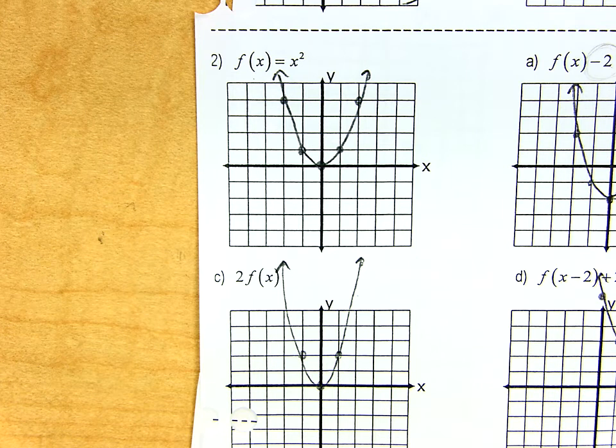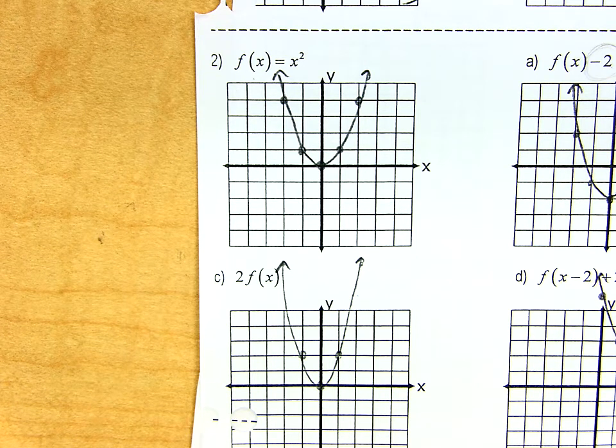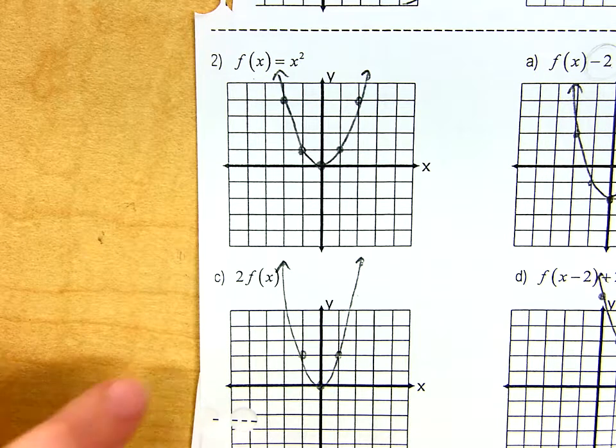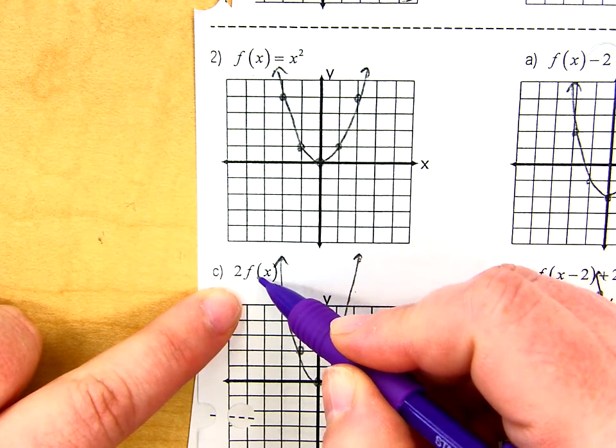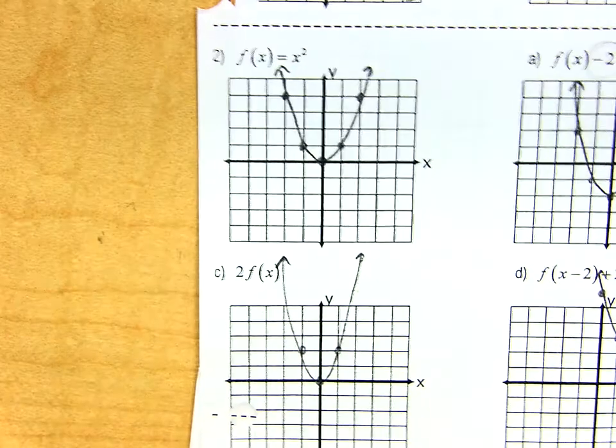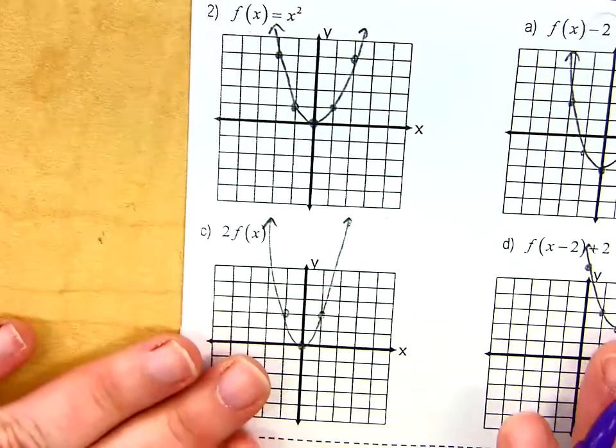If someone grabbed your hands and they pulled it up, it looks like it's shrinking. It is. It's doing both. But what you're really doing is you're taking all your y values and you're multiplying them by 2. So it's going to look like I have a more narrow U shape.